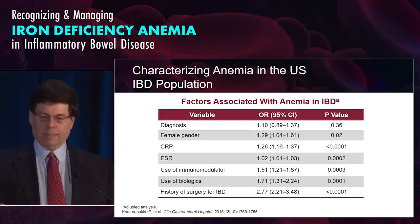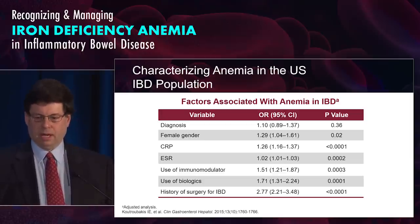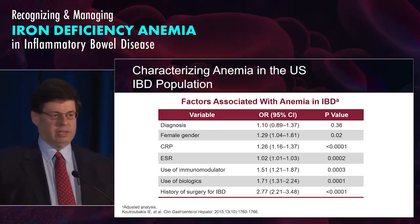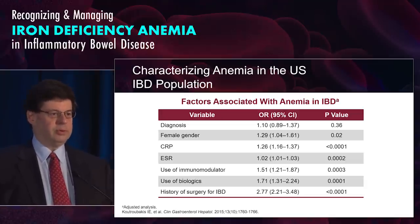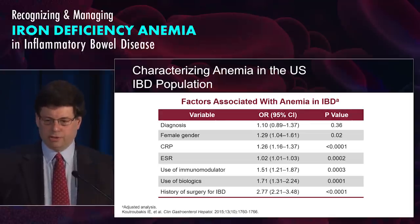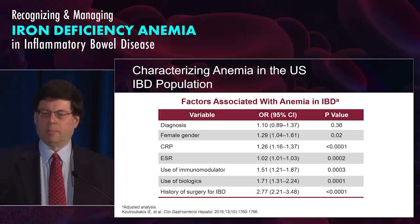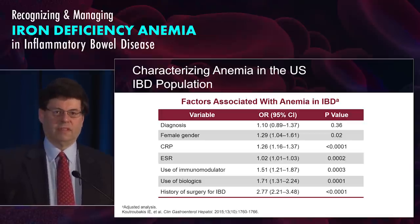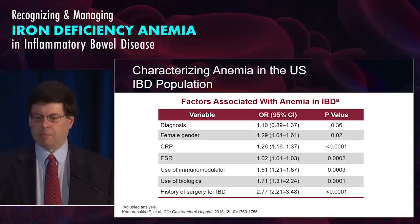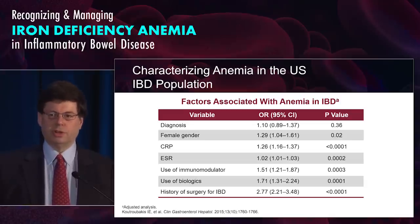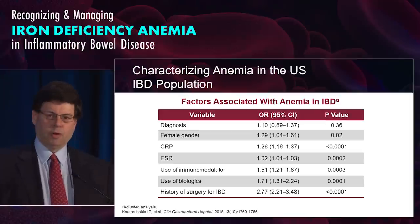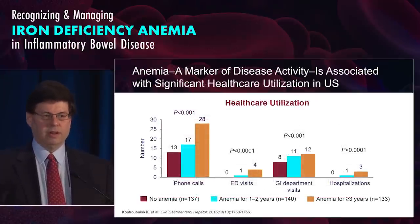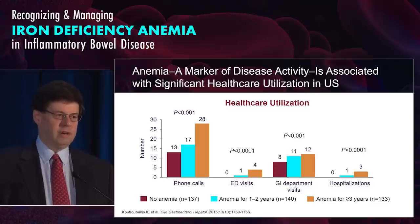Women are more commonly affected than males. CRP elevation is associated with it, which makes sense because if disease is active, you're more likely to have ulceration, inflammation, and bleeding. ESR rate as well, the use of an immune modulator or a biologic — again suggesting more moderate to severe disease is more likely to have anemia, though it's not exclusively found in that patient population. And prior surgery as well.